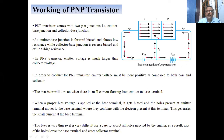When a proper bias voltage is applied at the base terminal, all the holes present at the emitter terminal move to the base terminal, where they combine with the electrons present at that terminal. This combination generates a small current at the base terminal. Since the base is very thin, it is difficult for it to accept all the holes injected by the emitter, so most holes leave the base and enter the collector, constituting the collector current. This is how conduction through a PNP transistor takes place.